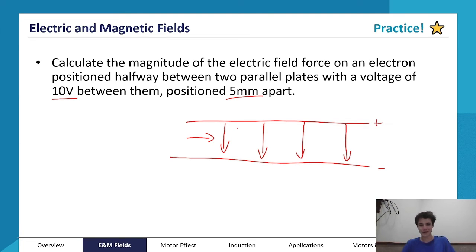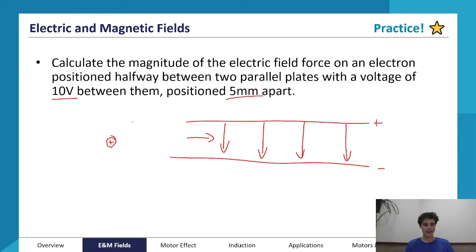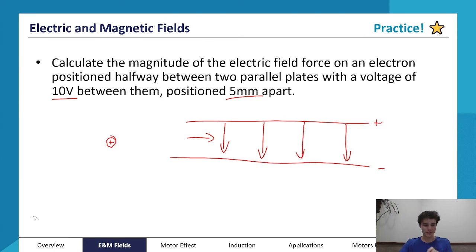Drawing a diagram — we have two parallel plates producing an electric field, with field lines going from positive to negative. The reason this parallel plate scenario comes up so much is because it generates a nice, neat, uniform electric field. Unlike a point charge where the field changes very quickly with distance — following an inverse square law — between parallel plates it stays exactly the same.